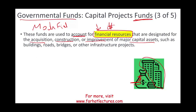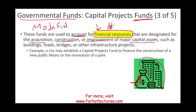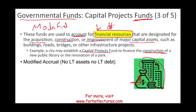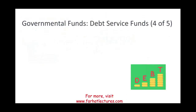Capital project funds cover infrastructure projects for the government. For example, a city might establish a capital project fund to finance the construction of a new public library or the renovation of a park. Again, modified accrual applies — no long-term assets, no long-term debt. We'll have a whole separate session on capital project funds.